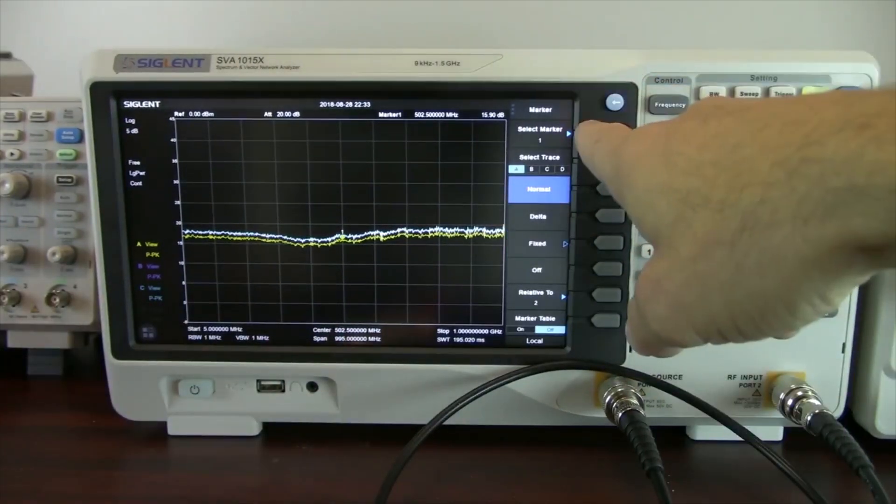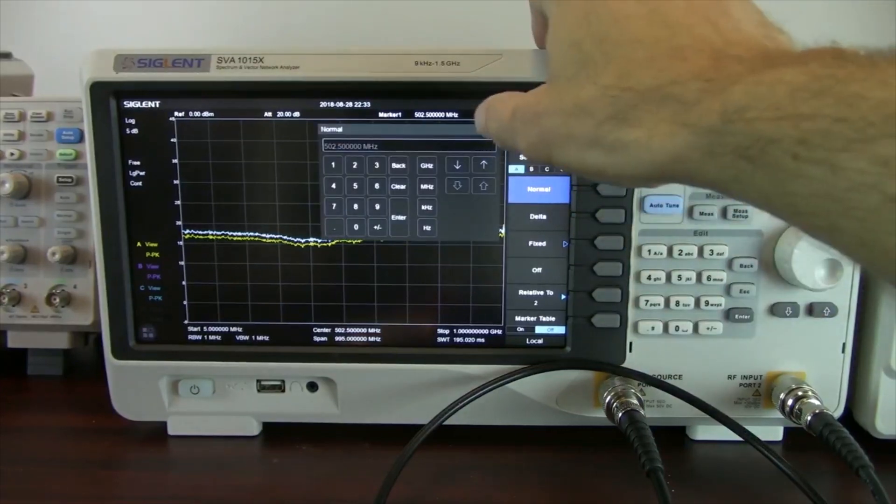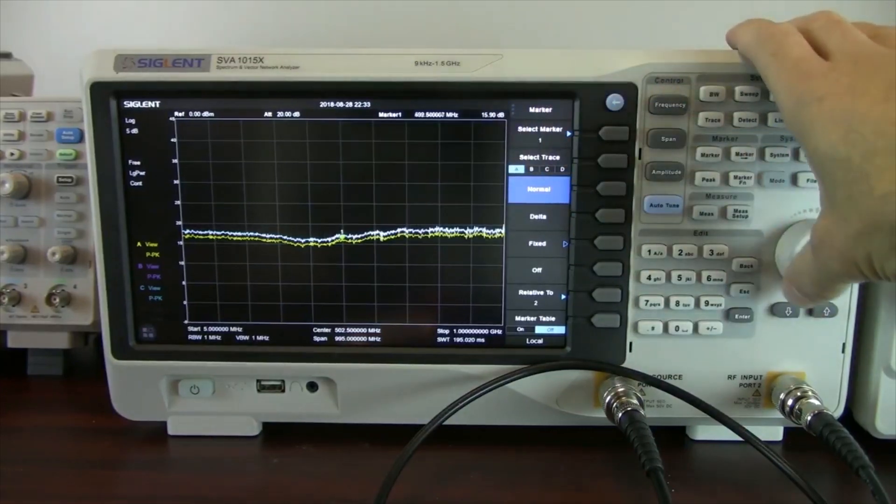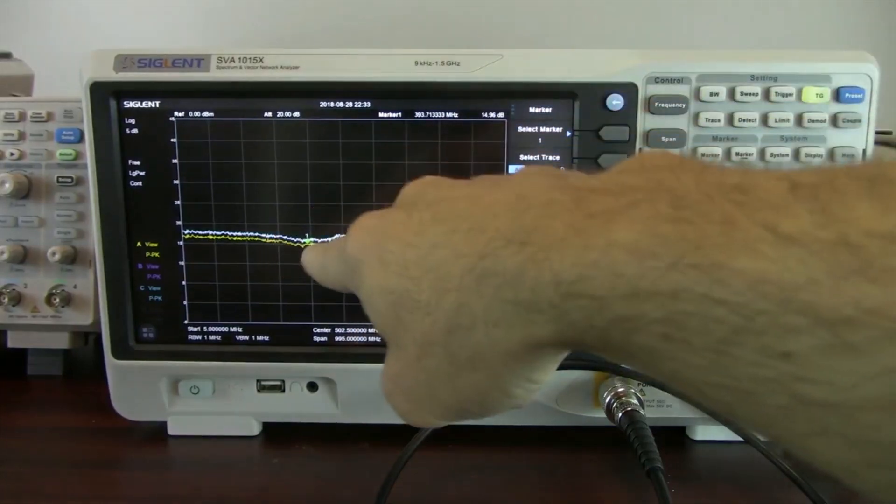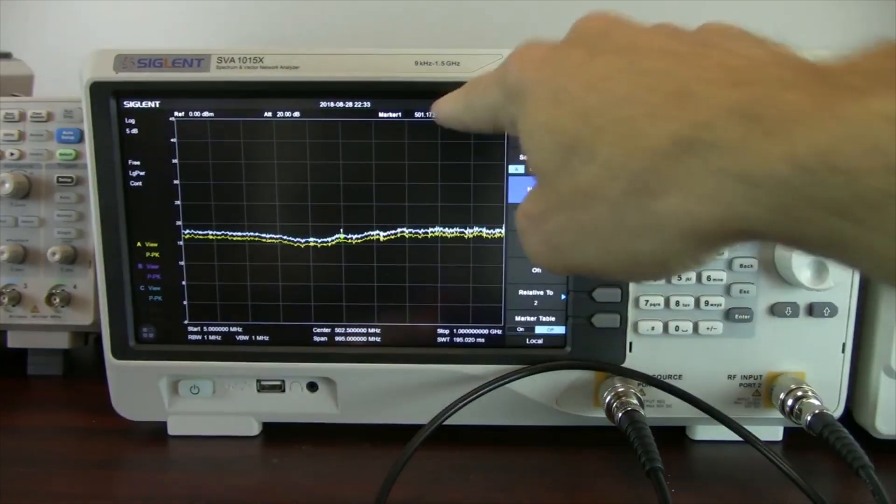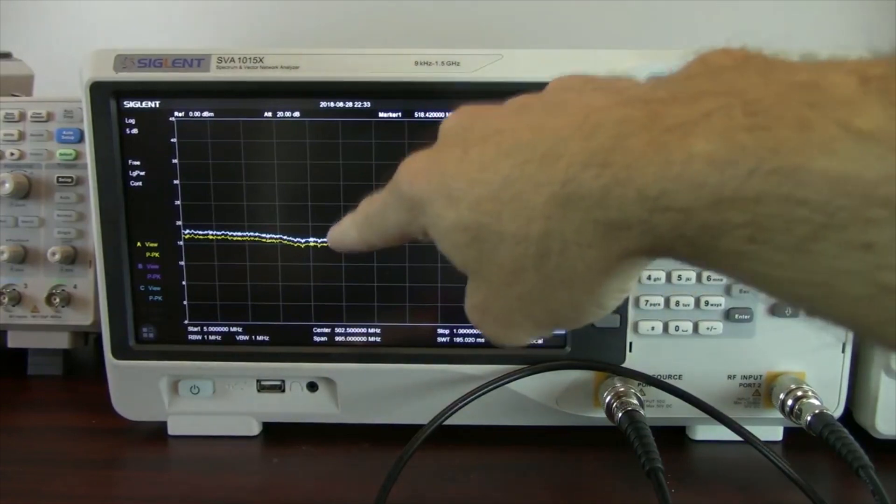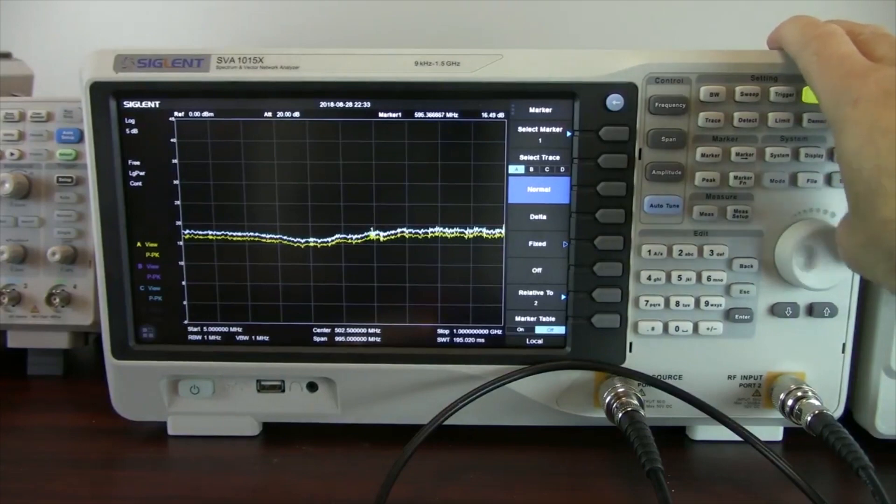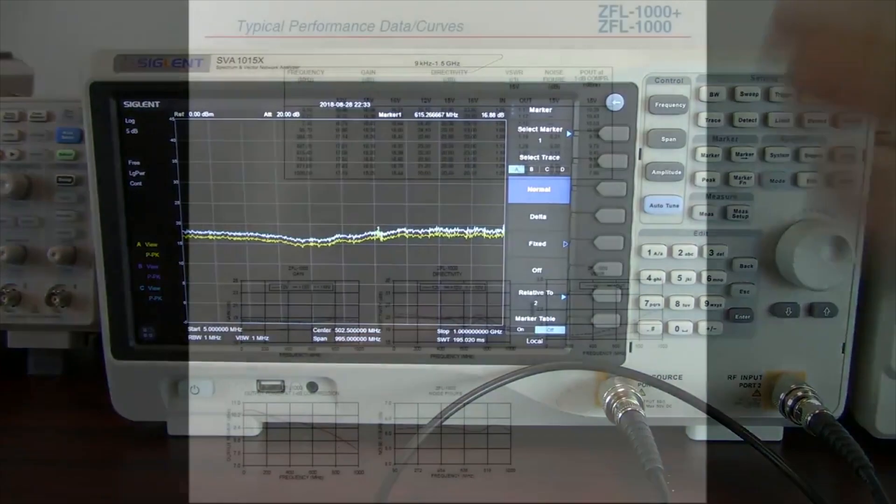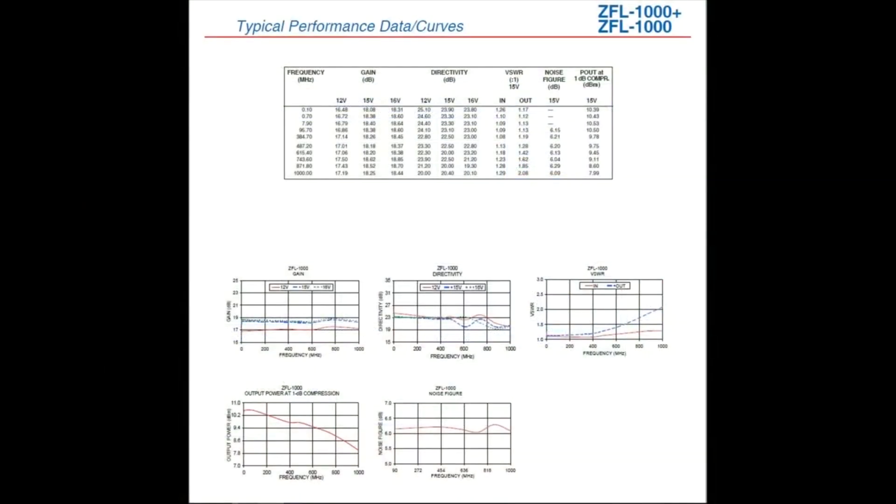We can use markers, select marker normal. We could select trace A. And we can move around the marker. We could take a look at the actual voltage gain, or the gain value at different frequencies. So I'm just moving the marker along different frequency values. Here you can see the marker. Here's the marker frequency position, and here's the amplitude. Looking at about 16 to 17 dB across that operating frequency range. So now in this particular test, we've verified that this amplifier is working according to specification across this frequency range.